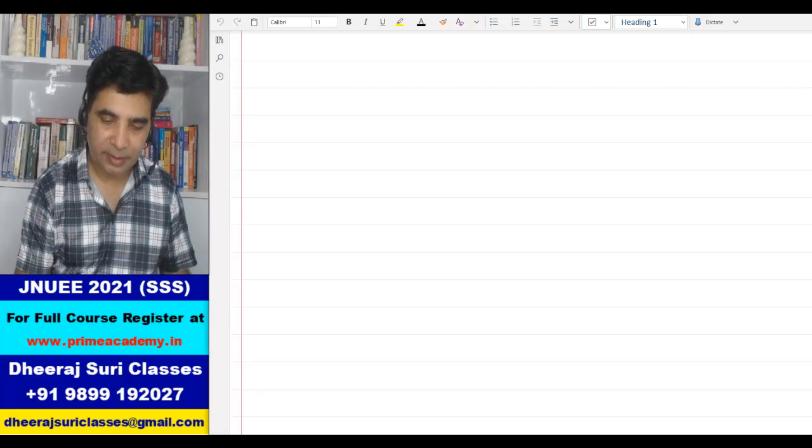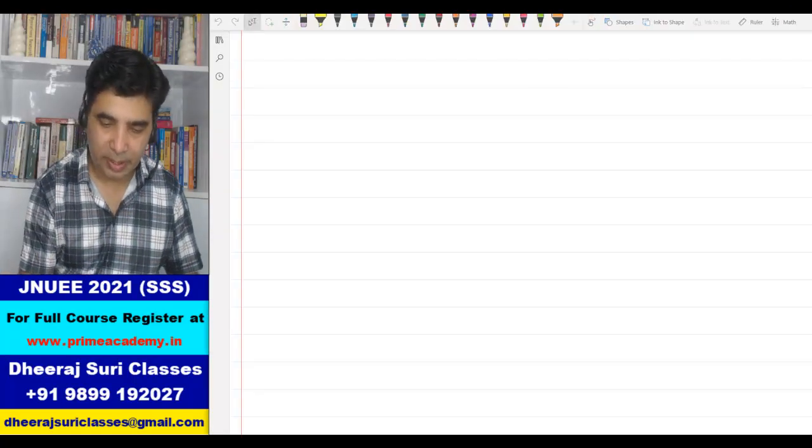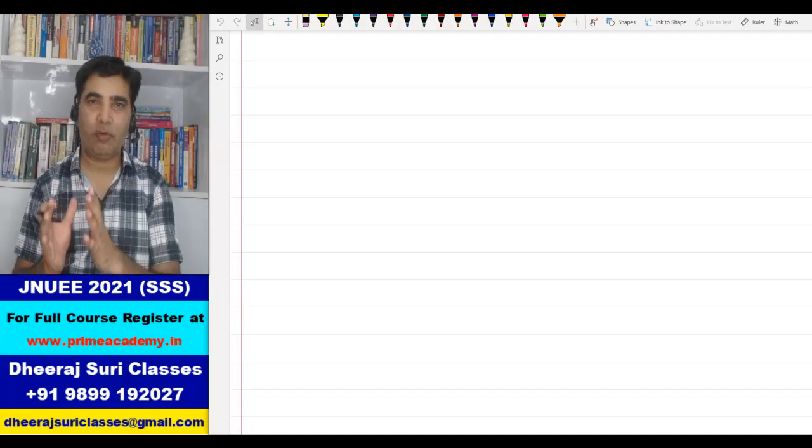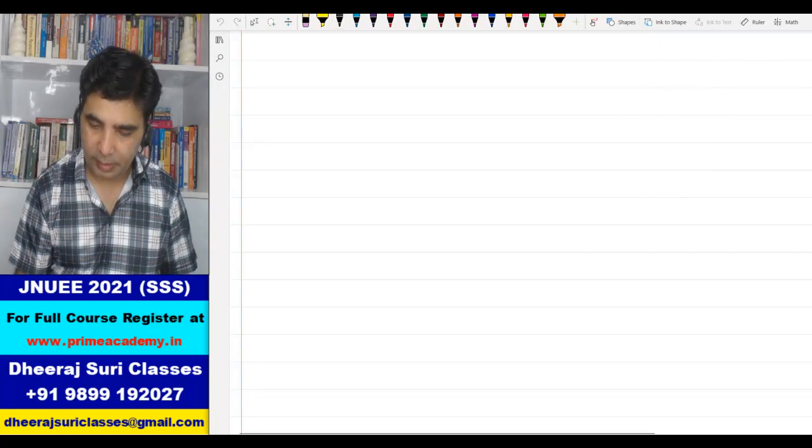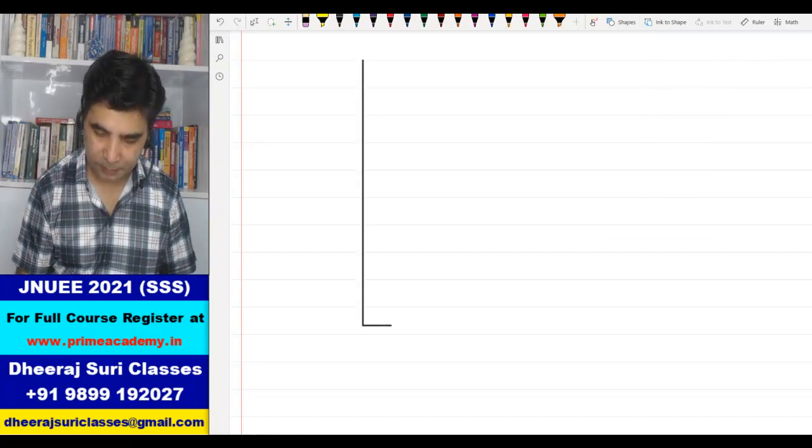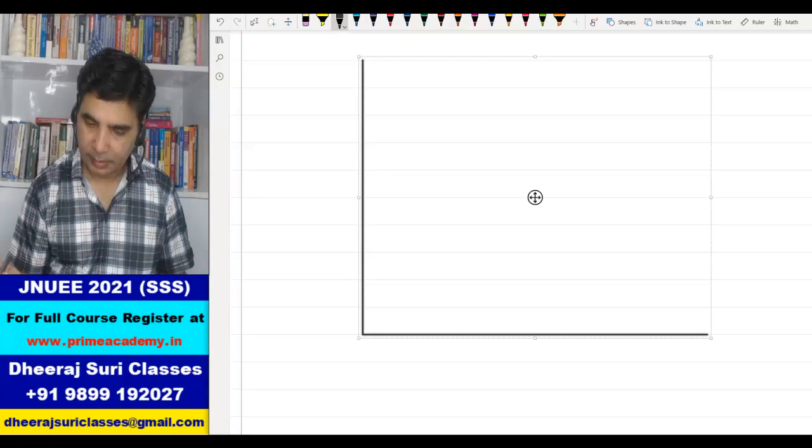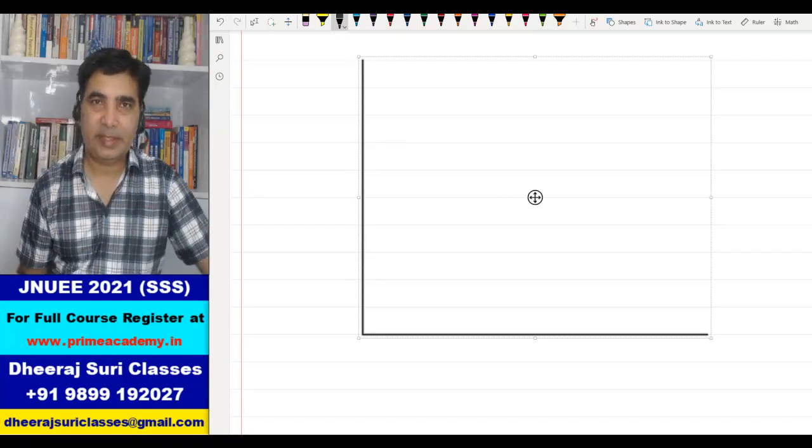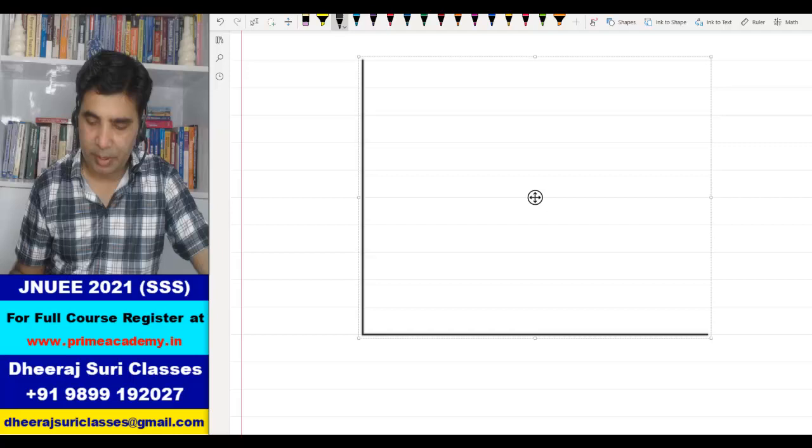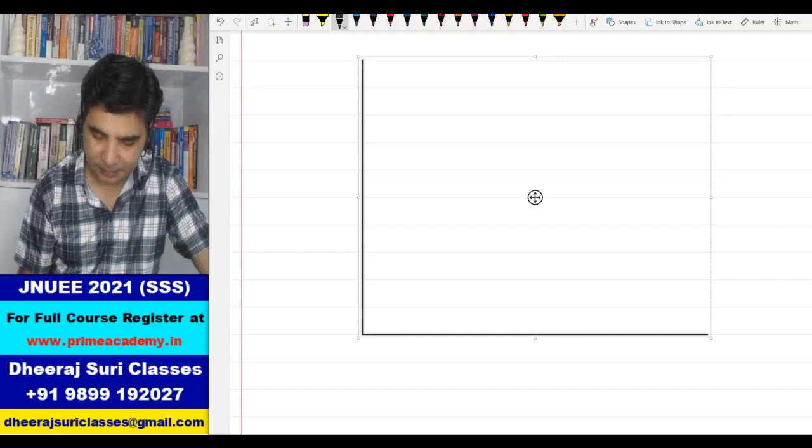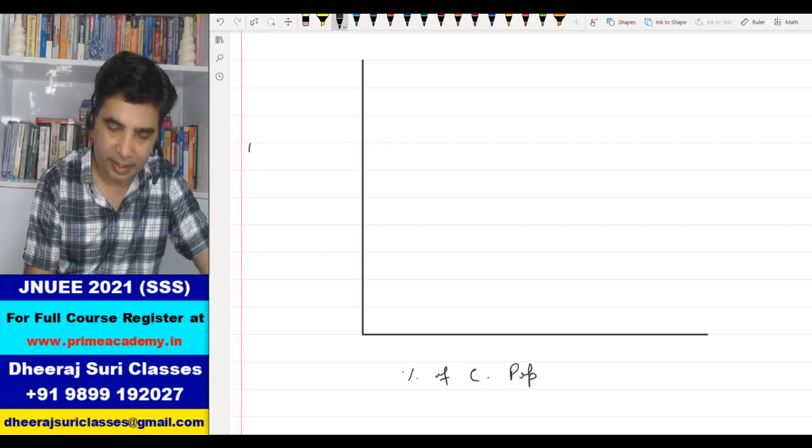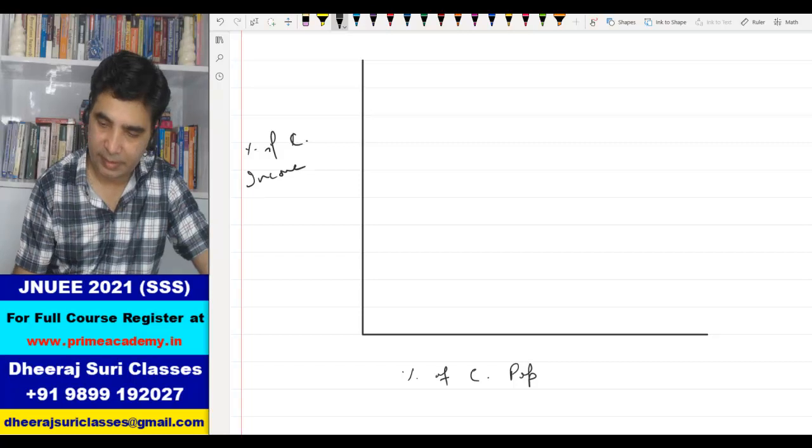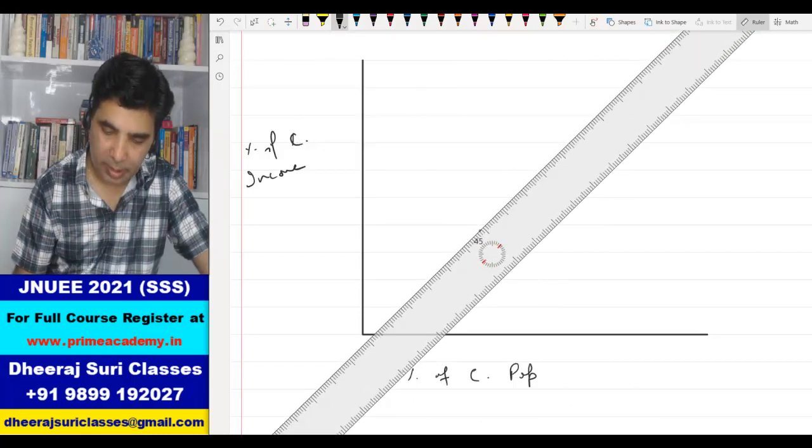Before solving this question I would like to take you to the concept of how we can relate the Gini coefficient and the Lorenz curve. Let me draw the Lorenz curve first of all. This is the axis where we take percentage of cumulative population on the x-axis and percentage of cumulative income on the y-axis.